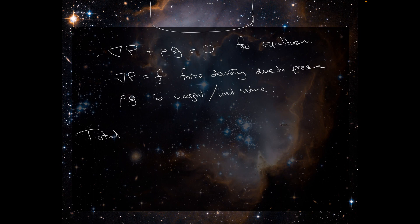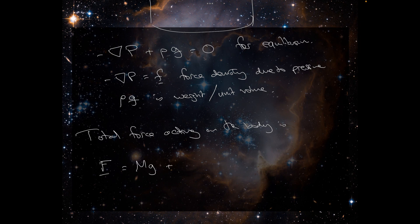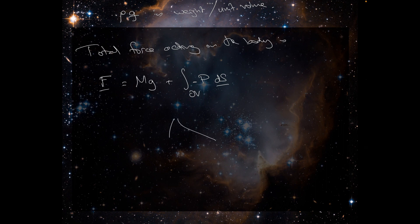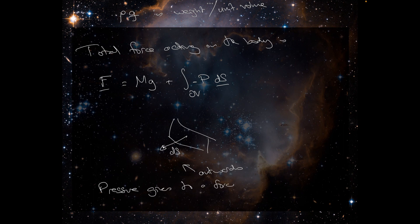The total force acting on the body is given by its weight plus the integral over the boundary of the body of the pressure times dS, except we need to put a minus sign here, because given a little area of the surface, dS points outwards, whereas the pressure gives rise to a force in the opposite direction. So it gives rise to a force of the pressure dS.